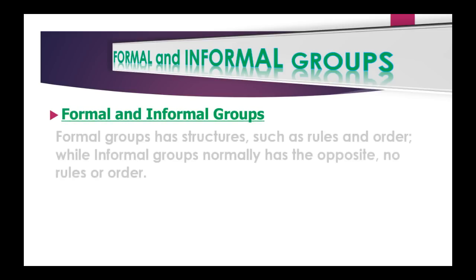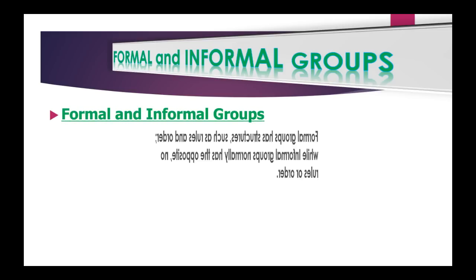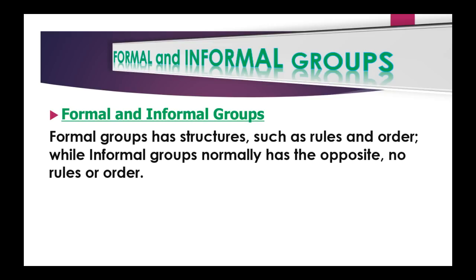Now moving on to formal and informal groups. Formal groups have structures, such as rules and orders, while informal groups normally have the opposite — no rules or orders. Social groups can also be categorized as either formal or informal based largely on how the groups are organized.